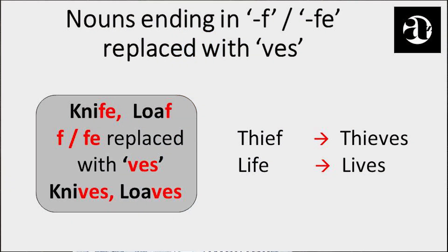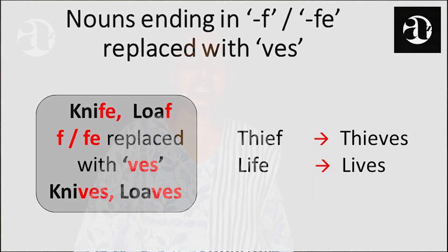When a noun ends in F or FE, we replace the last letter F or the last two letters FE with VES to form the plurals. Knife becomes knives — here we replace FE with VES. So also, loaf, thief, and life — the last letter F or the last two letters FE is replaced with VES.